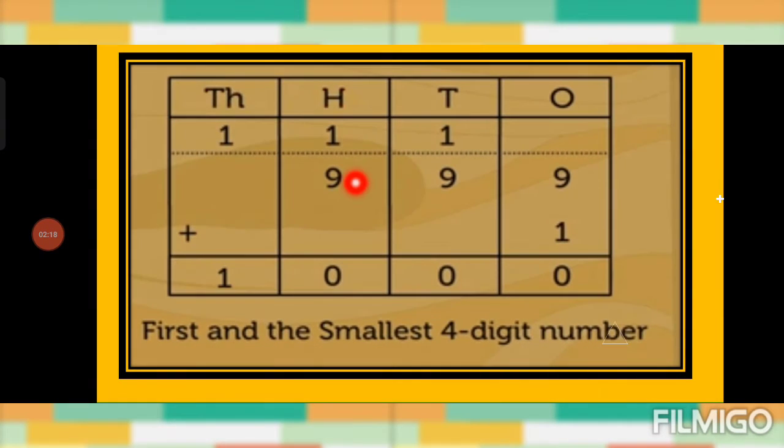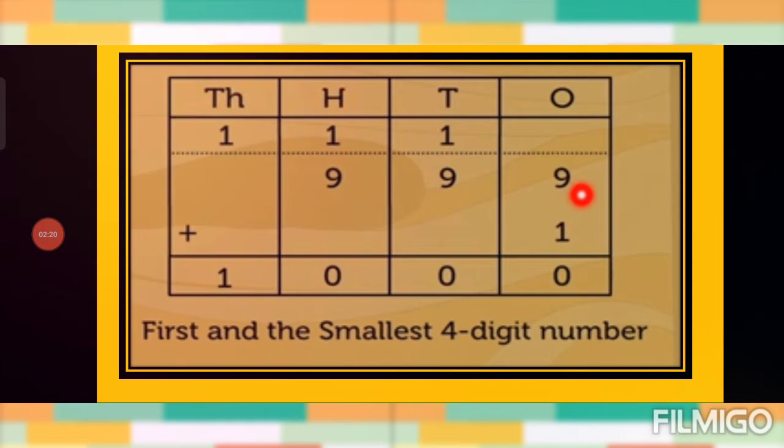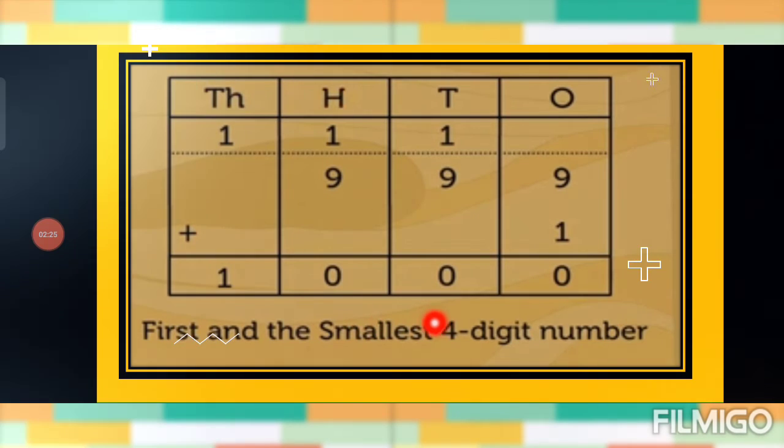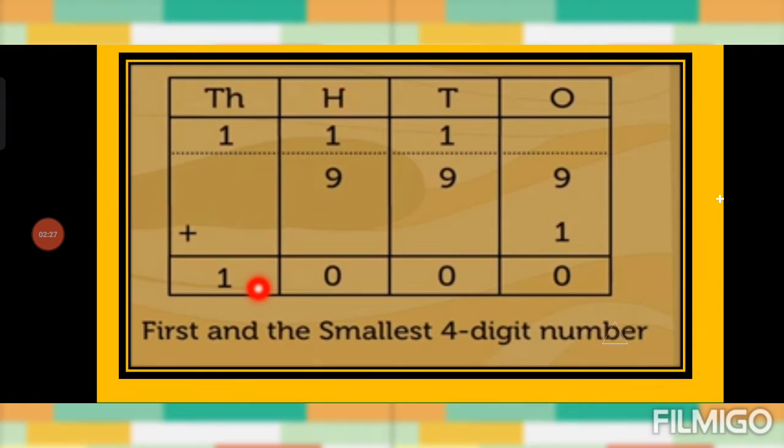You can see here, 999 plus 1. The first and smallest four digit number is 1000.